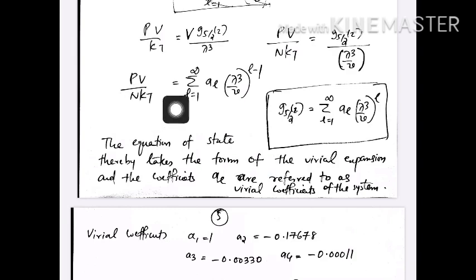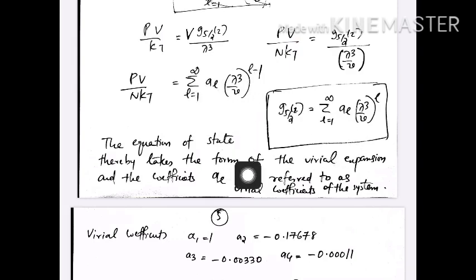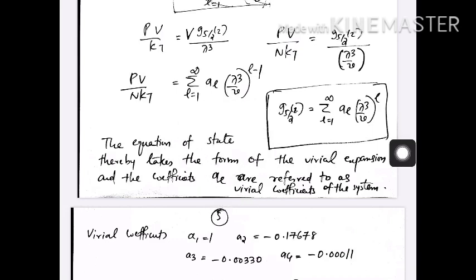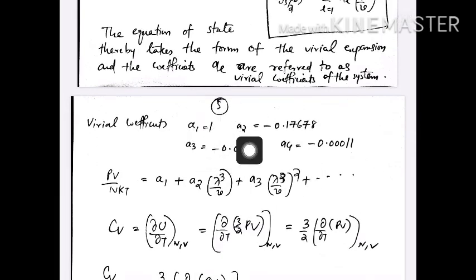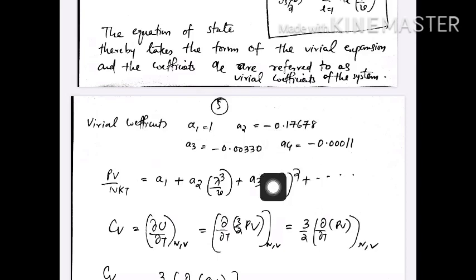So PV/NkT gives the equation of state as a series expansion in terms of lambda^3/v with coefficients A_L, and this is called the virial expansion. The virial coefficients have been determined: a1 is 1, a2, a3, a4 are given values. In terms of lambda^3/v, we can write PV/NkT in this expanded form, and this is the equation of state.